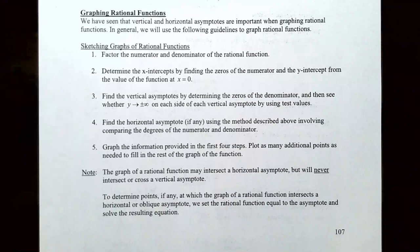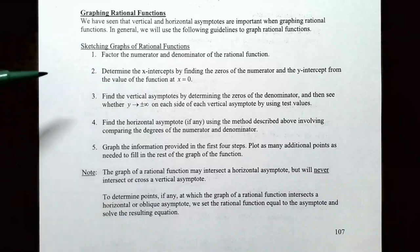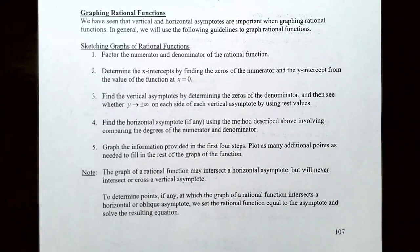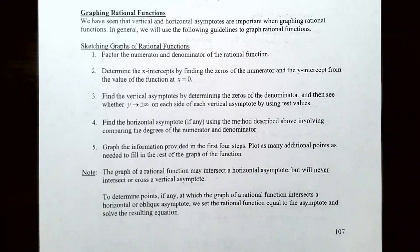Step two: determine the x-intercepts by finding the zeros of the numerator, and find the y-intercept from the value of the function at x = 0. You can find where the graph crosses or touches the x-axis by finding x-intercepts and their multiplicities, and also find the y-intercept as long as the y-axis is not a vertical asymptote.